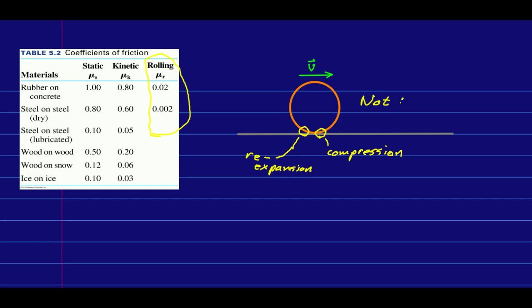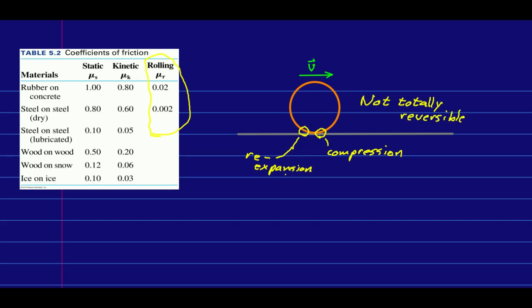and some re-expansion at the back of where the object is in contact with the surface that it's rolling over. But this is not totally reversible. The re-expansion doesn't quite undo the compression perfectly. And so that means some energy is dissipated in this process. And a wheel or ball or something rolling along must slow down gradually because of dissipation. And because it's slowing down, that tells us there must be a force back against the rolling. And this is a rolling friction.